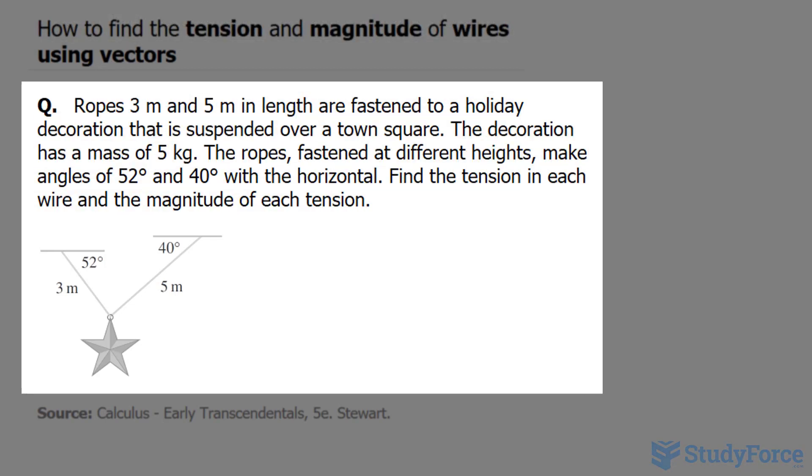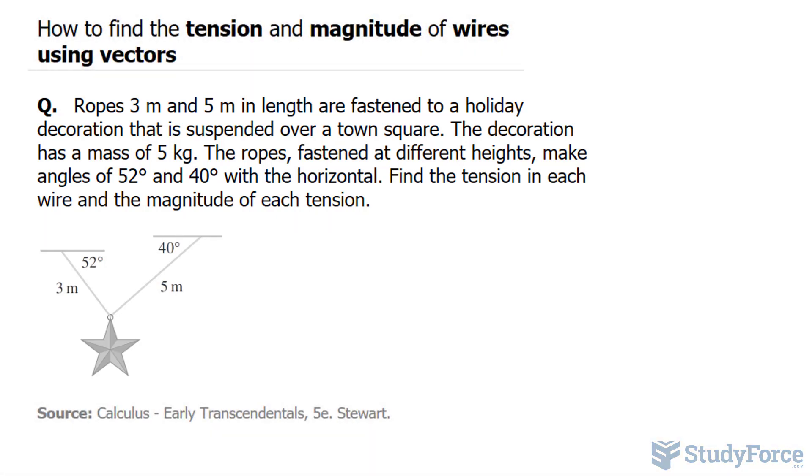The decoration has a mass of 5 kilograms. The ropes, fastened at different heights, make angles of 52 degrees and 40 degrees with the horizontal. Find the tension in each wire and the magnitude of each tension.